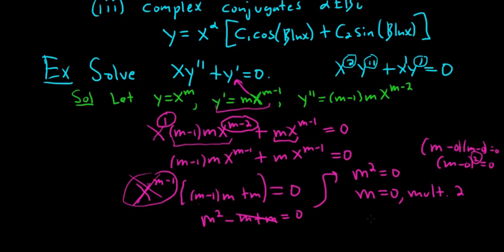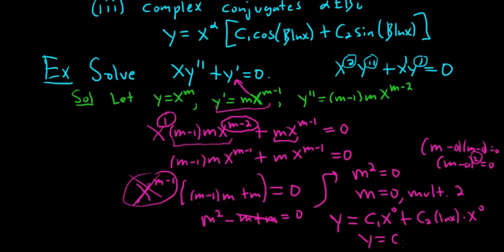Since we have a repeated real root m equals 0 with multiplicity 2, the answer is y equals c1 x to the 0 plus c2 ln x times x to the 0, which simplifies to y equals c1 plus c2 ln x. That is the solution to the differential equation. In the videos that follow, you'll find more examples.